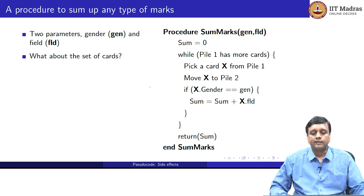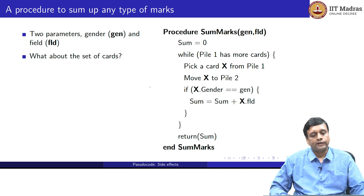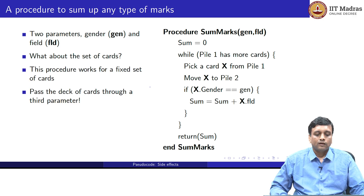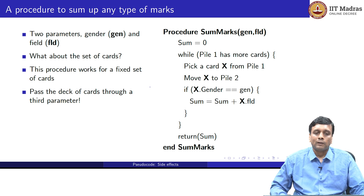Notice that this procedure assumes that there is a fixed set of cards which it is operating on. There is no mention in this about what pile 1 is, so pile 1 is assumed to already exist. This procedure exists in a context where pile 1 is fixed. If we want to make this work across different sets of cards — different grade cards for different classes, for example — then we need to also pass the deck of cards as a parameter.